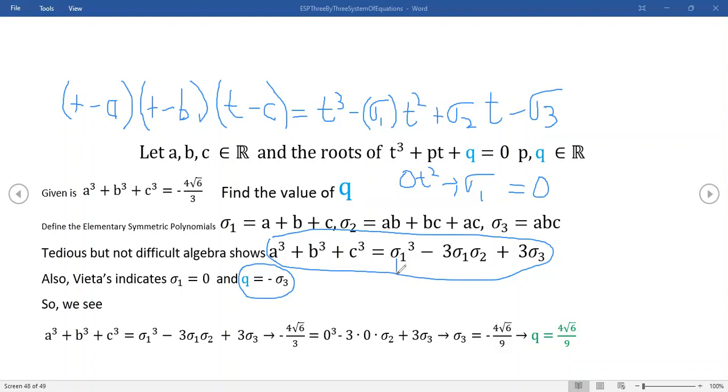But what we know now is, we already know that σ₁ is equal to zero, right? So that means that this term right here will vanish. And this σ₁ is involved right here, so this entire term will vanish as well. And a³ + b³ + c³, guess what? That's given.